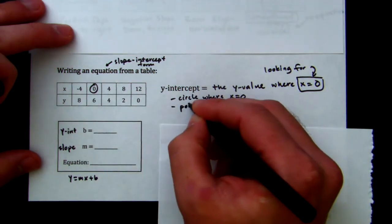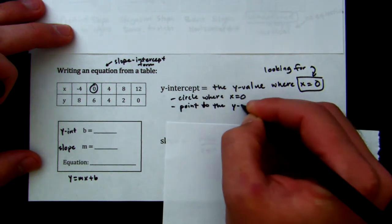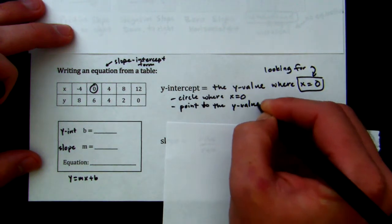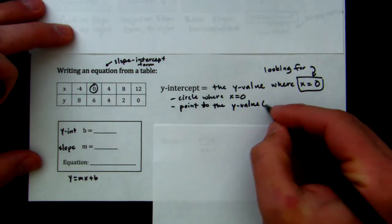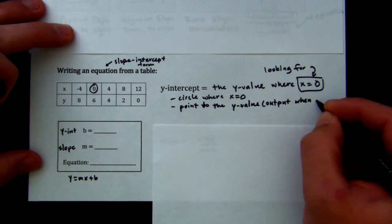Now, we point to the y value, which, if we are thinking about it, is the output when, and I know this is a little complex, it's the output when x equals 0. So it's the number right below it.